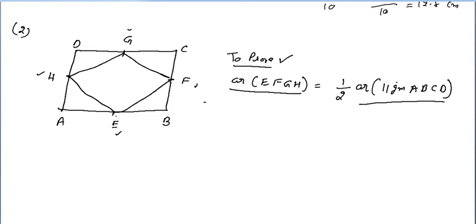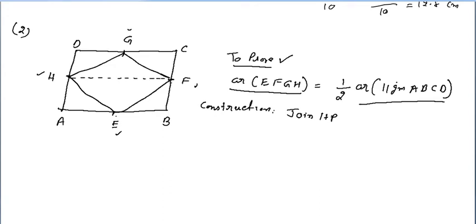We want to prove that the area of EFGH is half the area of parallelogram ABCD. We will take a small construction: join H and F.